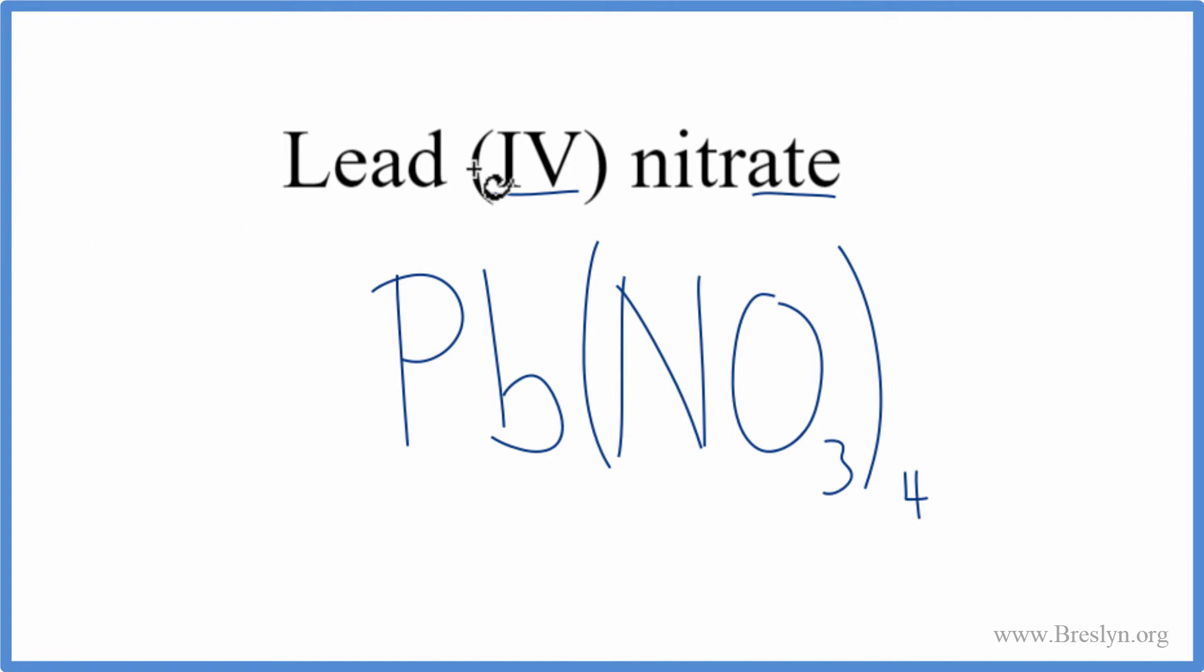Let's check our work, make sure we got that. We said lead has a four plus, because of the Roman numeral, and the nitrate we looked up, that had a one minus. So I have four of these nitrate ions, and each one is one minus, four times one minus, that's four minus, one times the four plus, that's four plus. So four plus, four minus, net charge is zero. This is the correct formula for lead four nitrate.